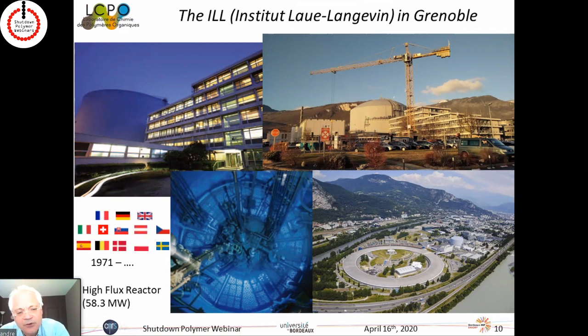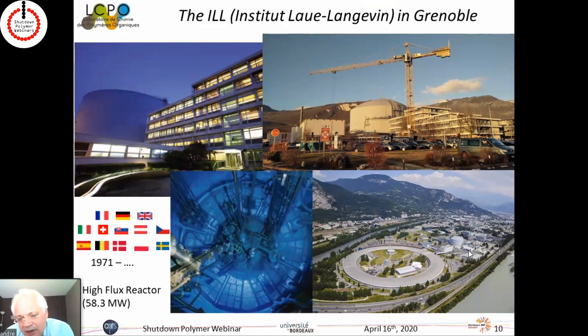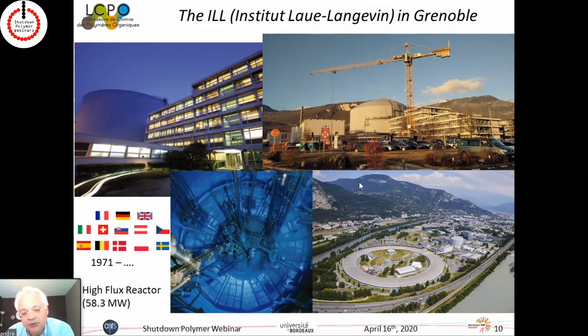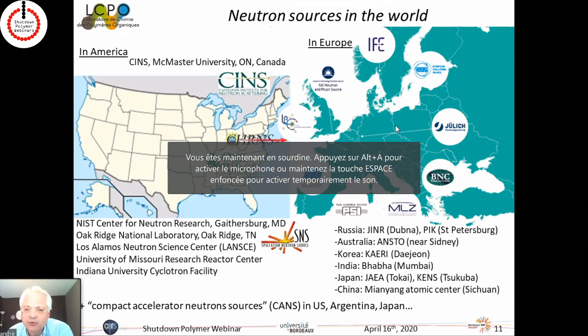In the 1970s, a powerful reactor was built in Grenoble called the High Flux Reactor (HFR). This is located on the Grenoble campus alongside a synchrotron. The ILL (Institut Laue-Langevin) is an international facility originally established by France and Germany, later joined by the UK and other countries — a truly European and international center. Anyone in the world can apply for beam time there.